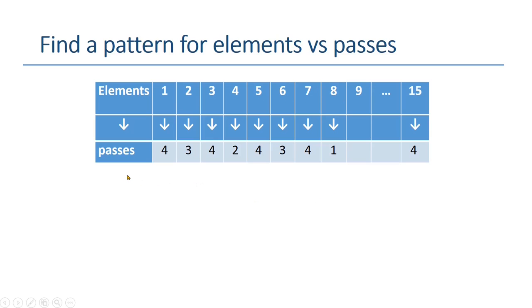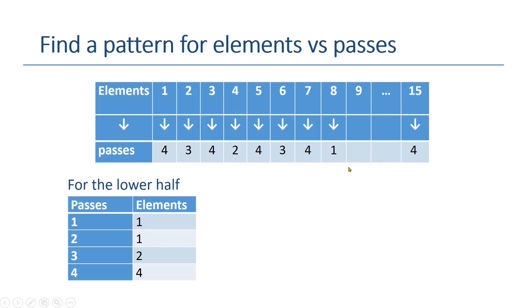If we just analyze the lower half of this array, we will see we have just one element that requires 1 pass. We have just 1 item, which is 8, that requires 1 pass. Then, we have 4 that requires 2 passes. Elements 2 and 6 would require 3 passes. That's why we have total of 2 elements. And lastly, 4 elements require 4 passes.